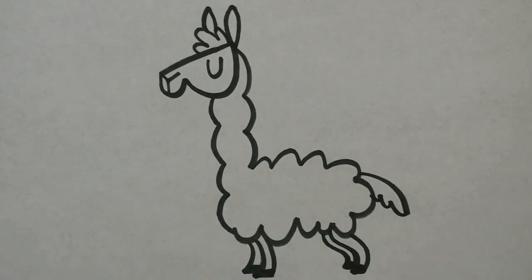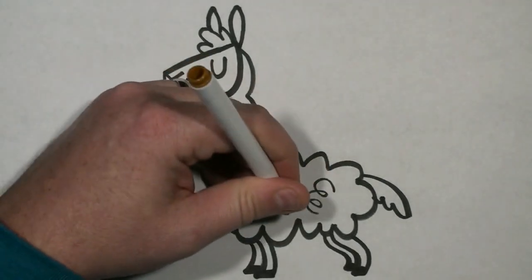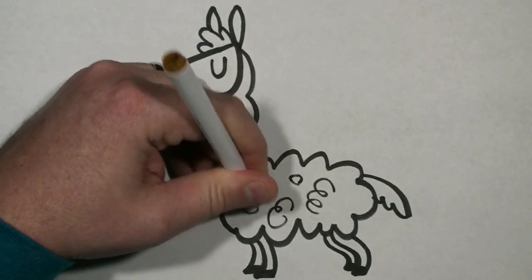If you'd like to show how woolly your llama is, you can just draw a few curved lines on the inside of its body.